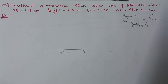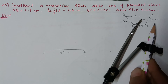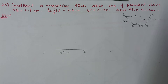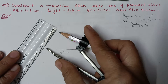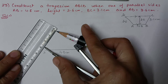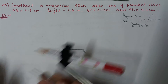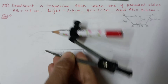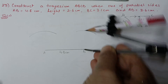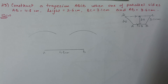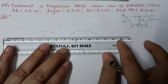Draw a parallel line to AB at a distance of 2.6 centimeter. Take 2.6 centimeter in the compass and put arcs from A and B. Join the tops of these arcs to get the parallel line for CD.